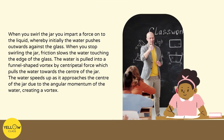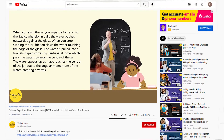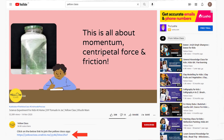When you swirl the jar, you impart a force onto the liquid, whereby initially the water pushes outwards against the glass. When you stop swirling, friction slows the water touching the edge of the glass. The water is then pulled into a funnel-shaped vortex by centripetal force, which pulls it towards the center of the jar. The water speeds up as it approaches the center due to angular momentum, creating a vortex. This is all about momentum, centripetal force, and friction.